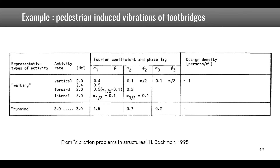Tables provide Fourier coefficients for walking forces in the vertical, forward, and lateral directions. For walking, the vertical direction typically has contributions from harmonics 1, 2, and 3. For running, these coefficients can be higher for the different harmonics.